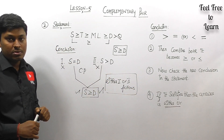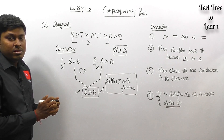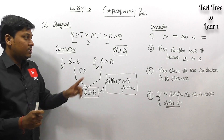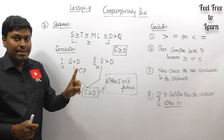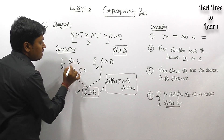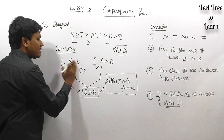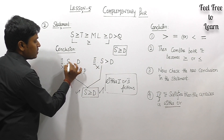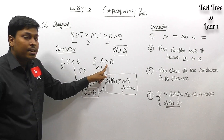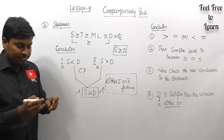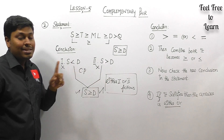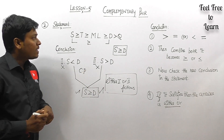One important clarification: it must fall under the specific category — greater than paired with equal to, or less than paired with equal to. Some students ask whether one greater than and one less than makes a complementary pair — the answer is no. If one conclusion is greater than and the second is less than, it is not a complementary pair.